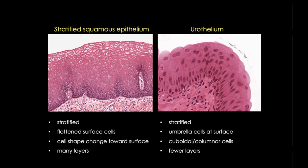Overall, look for larger, more columnar-looking cells in urothelium and more layers in stratified squamous epithelia. I hope these tips will help you solve this case of mistaken identity. Thanks for stopping by.